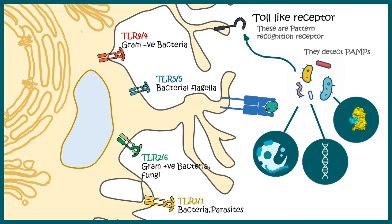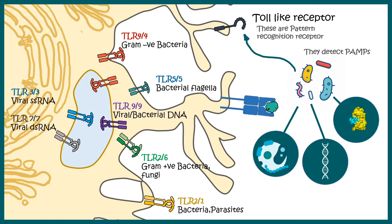There are also many toll-like receptors present in endosomes, such as TLR 4, TLR 9, TLR 7, and TLR 3. Many of these are responsible for determining intracellular pathogens — most of them detect viral RNA and viral DNA. Now we have an overview of what type of pattern recognition receptors are present on the dendritic cell surface. Let's try to understand the process of detection.